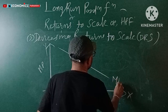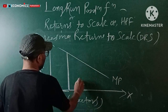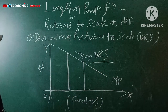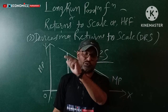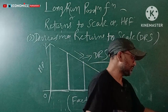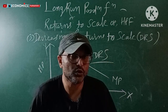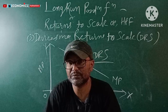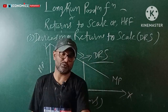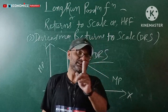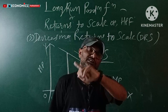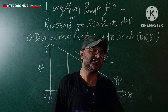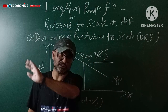For DRS, the MP curve slopes downward from left to right because MP decreases. In summary: for CRS, the MP curve remains constant and is parallel to the x-axis. For IRS, the MP curve slopes upward from left to right because MP increases. For DRS, the MP curve slopes downward from left to right because MP decreases. Finally: in CRS, factors increase lambda times and output increases lambda times; in IRS, output increases more than lambda times; in DRS, output increases less than lambda times.